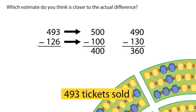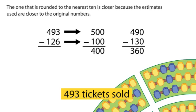Which estimate do you think is closer to the actual difference? The one that is rounded to the nearest 10 is closer because the estimates used are closer to the original numbers.